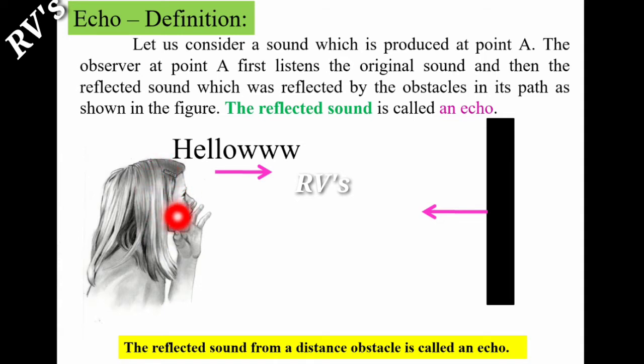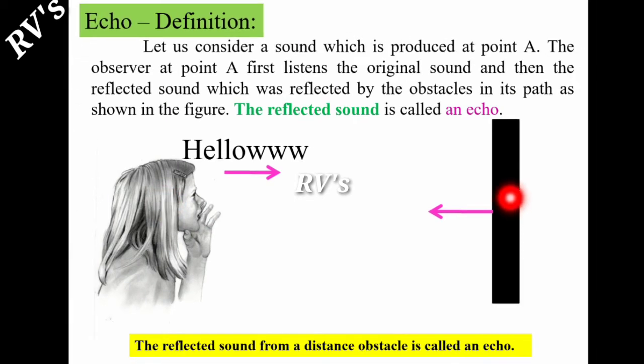When the sound is generated, the observer at point A listens to the original sound immediately and instantaneously. Then, the reflected sound, which was reflected by the obstacles in its path, as shown in the figure. This reflected sound is called an echo.